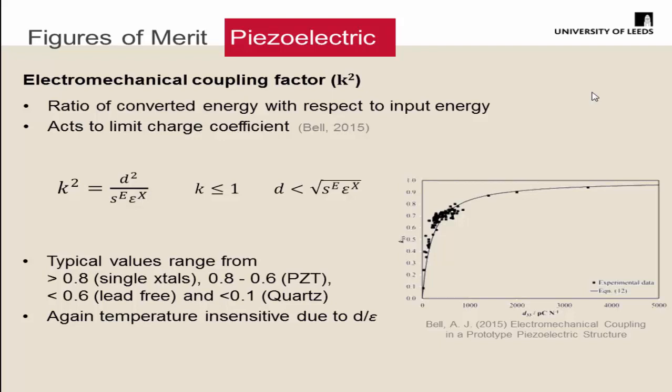Typical values of K and D33 can range across the whole breadth from nought to one, looking at different things: single crystals of PMNT to PZT polycrystalline — the lead-free materials tend to be a little less — and then things like quartz. This seems to be temperature-insensitive due to the relationship between D and permittivity.